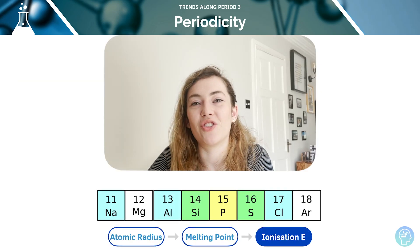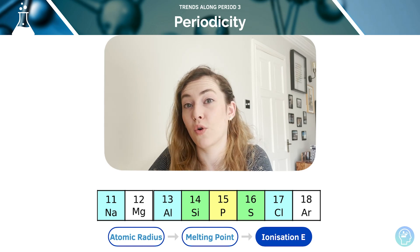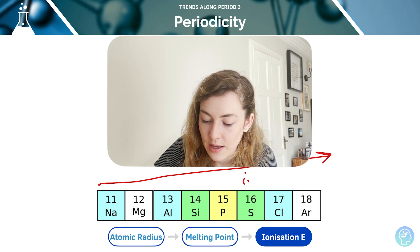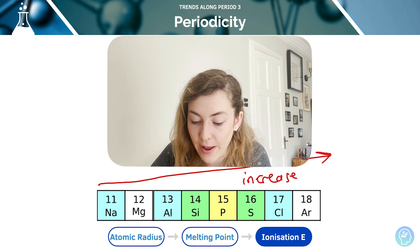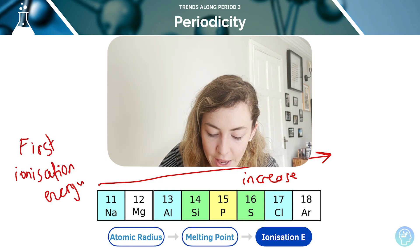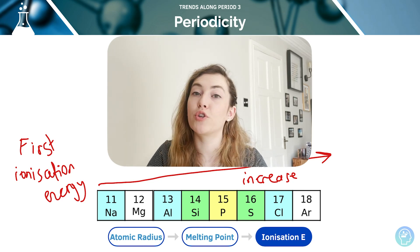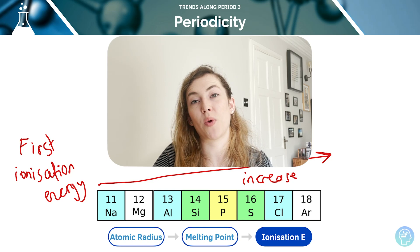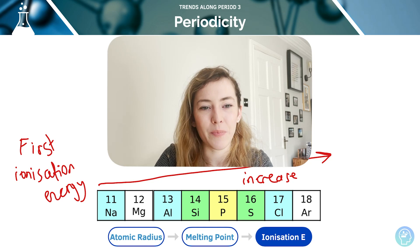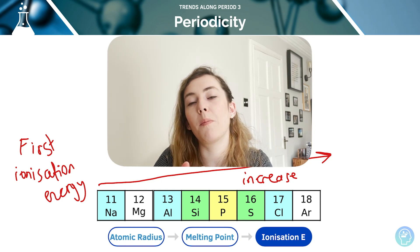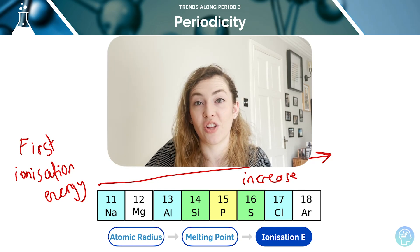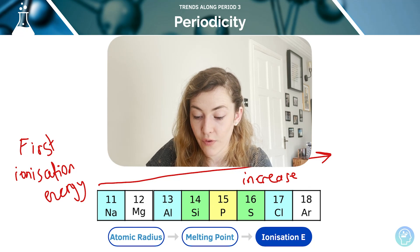Let's think about ionisation energies. Do you think they're going to increase or decrease as we move across period 3? Ionisation energy is going to increase as we move across period 3. We're talking about first ionisation energies, not successive. As the number of protons increases, the attraction between the positive nucleus and the negative outer electrons increases — that's also what makes the radius decrease. So more energy is going to be required to overcome that force and remove the outermost electron, causing the first ionisation energy to increase as you move across period 3.